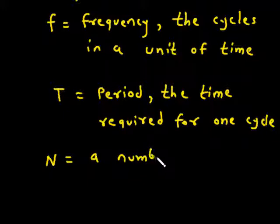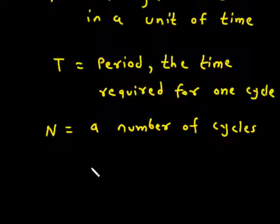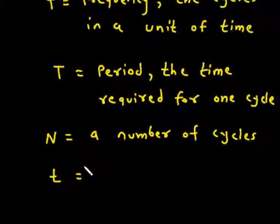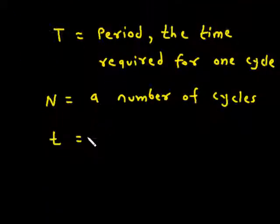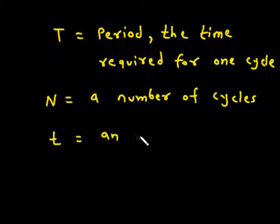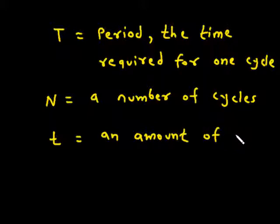N is equal to the number of cycles. T is equal to an amount of time.